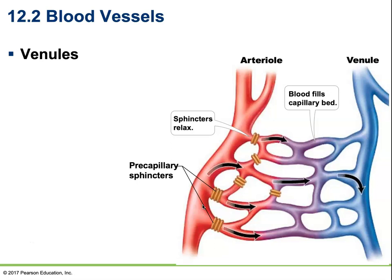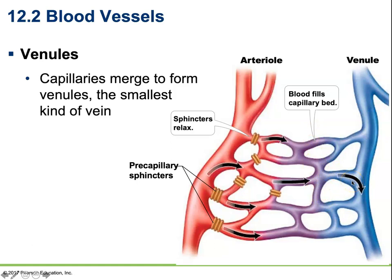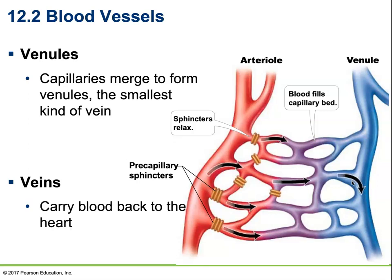From our capillaries, we move into our venules. Here's a quick diagram: we had arteries, arterioles responsible for controlling blood flow into the capillaries, then gaseous exchange in the capillaries, and then we move into our venules. Venules are where the capillaries merge to form the smallest kind of vein. From those venules, we go to our veins, which carry the blood all the way back up to the heart. And that's it for our discussion on blood vessels.